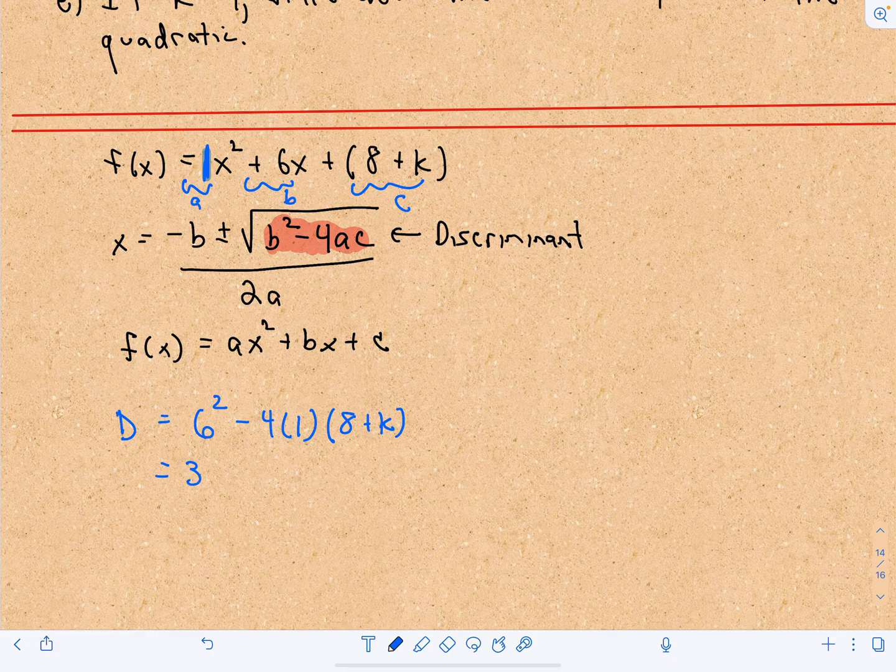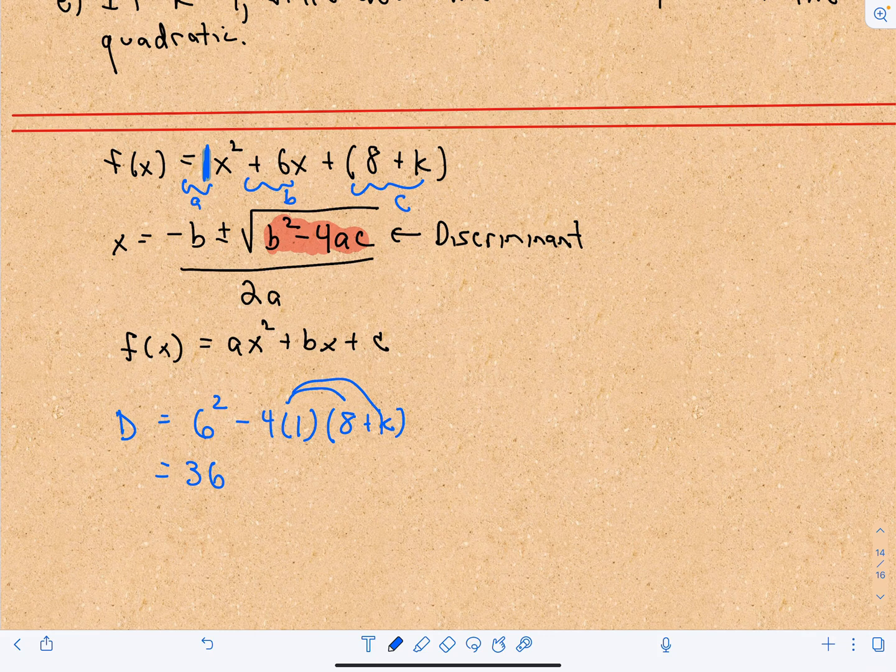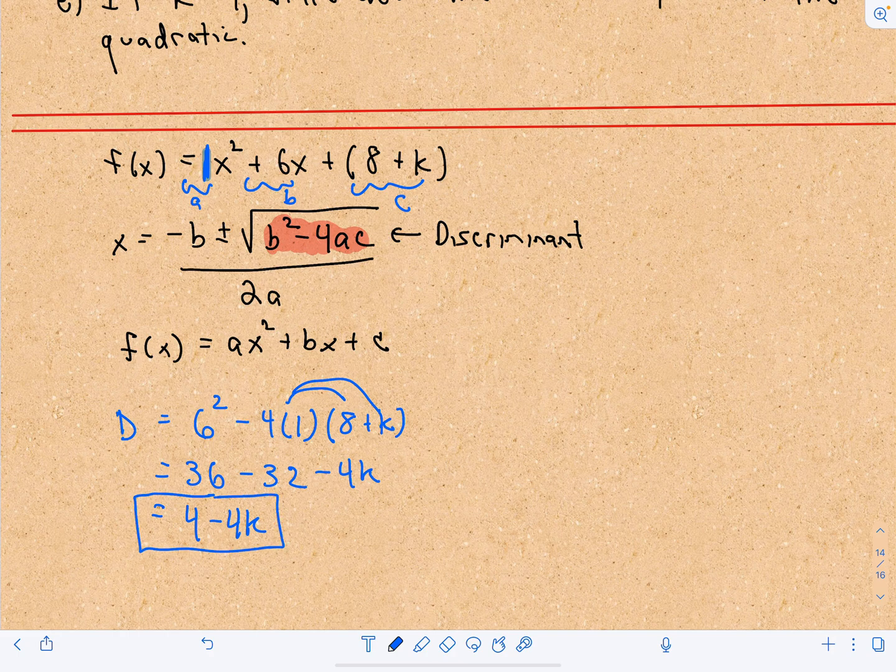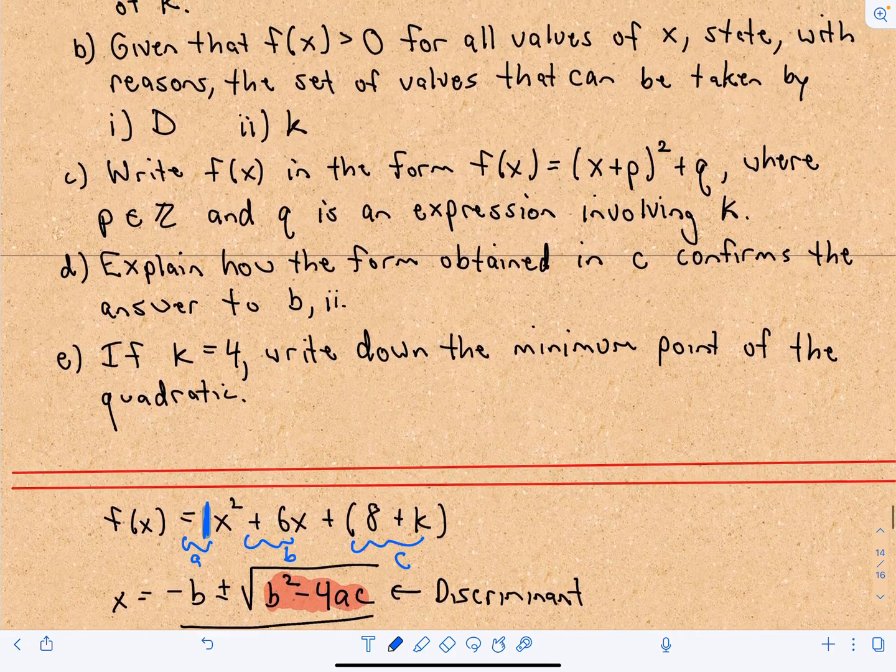So 6 squared is 36. Well, 4 times 1 is 4, and we will distribute that to the 8 plus k. So we'll get minus 32 minus 4k. So 36 minus 32, that's 4 minus 4k. And that's going to be the discriminant in terms of k.